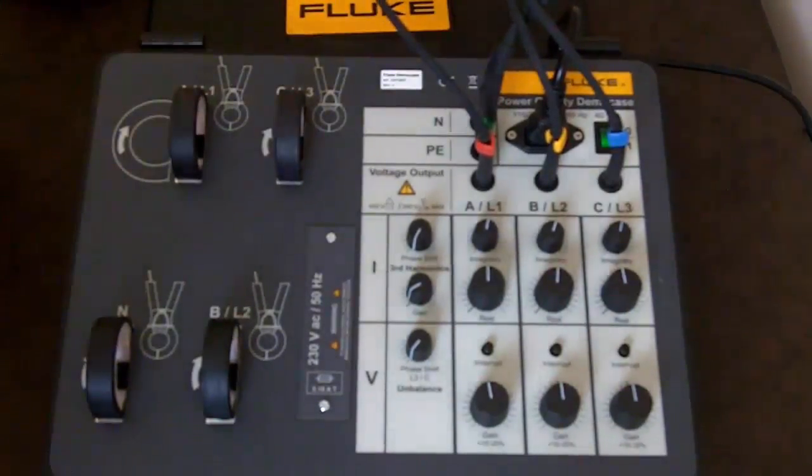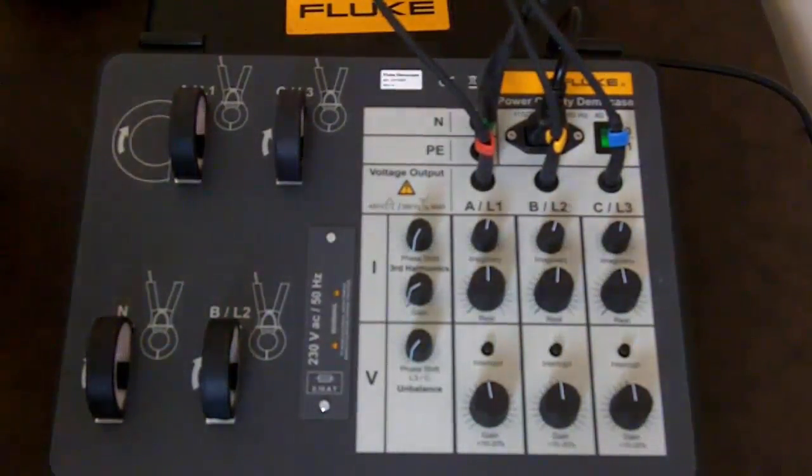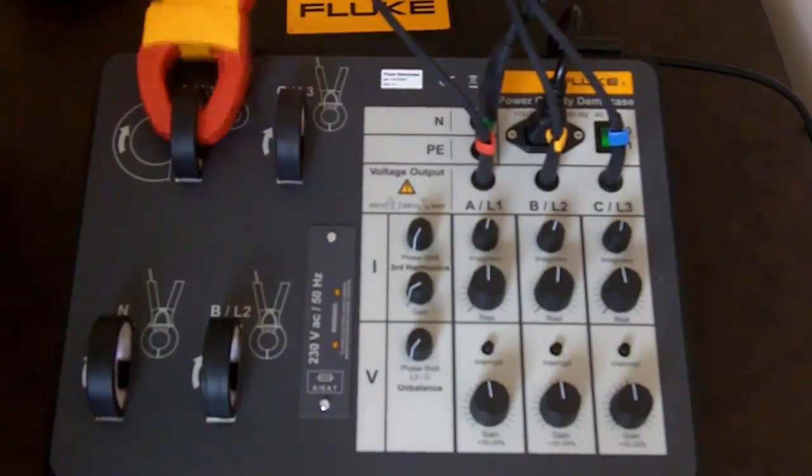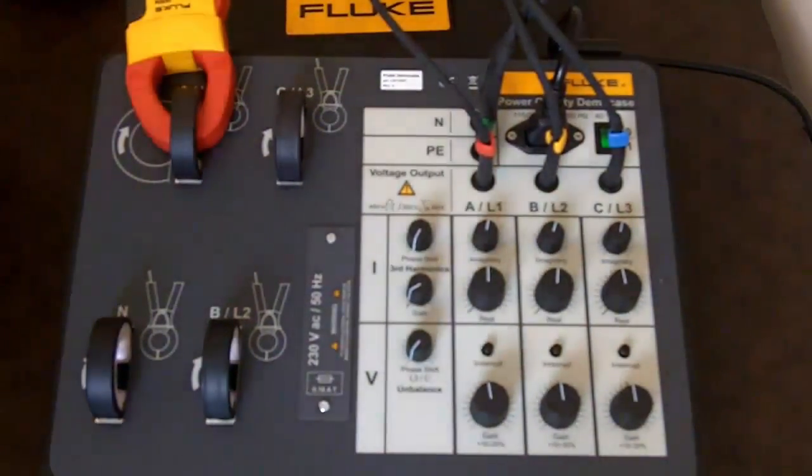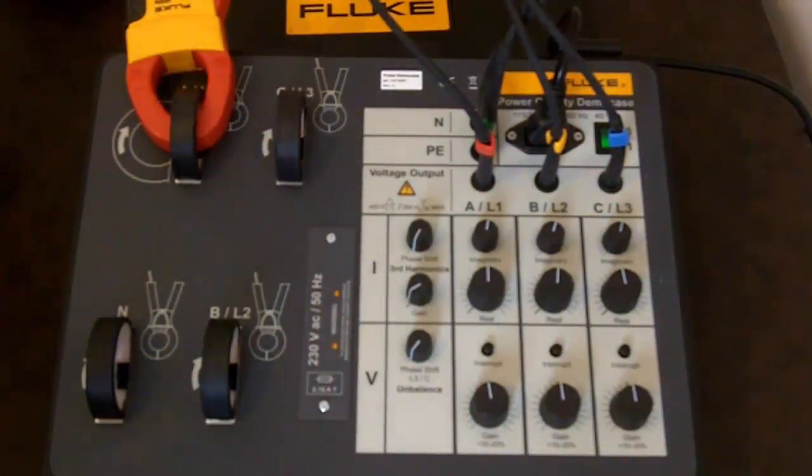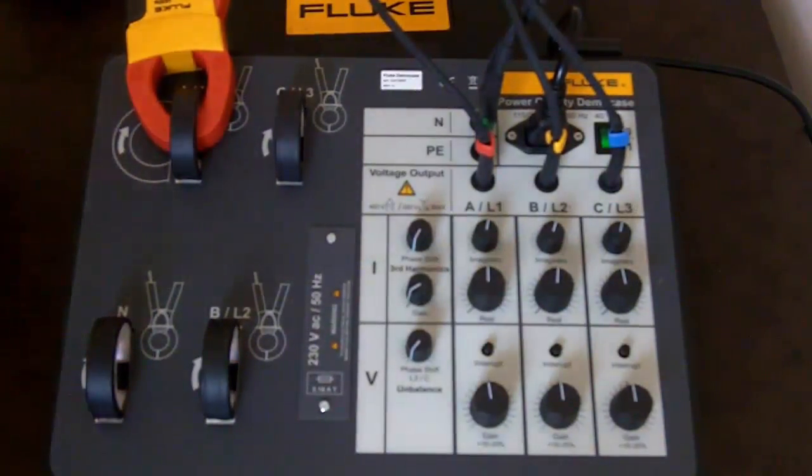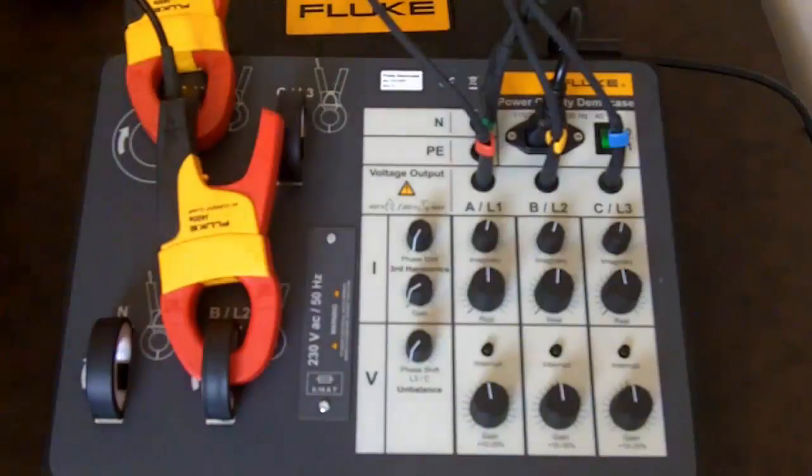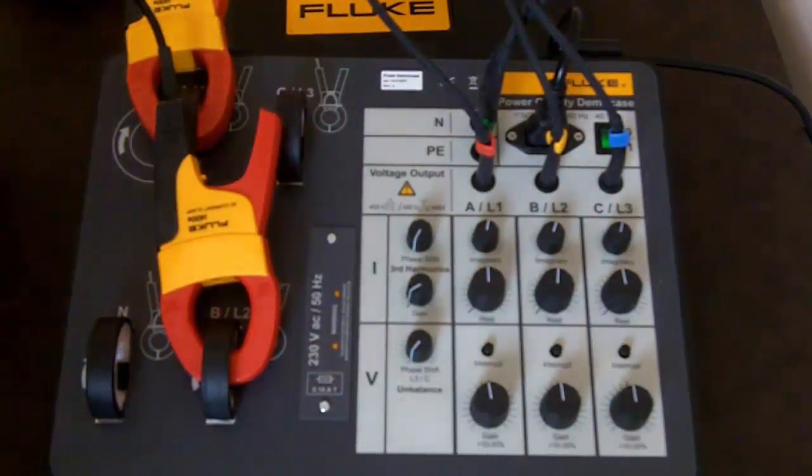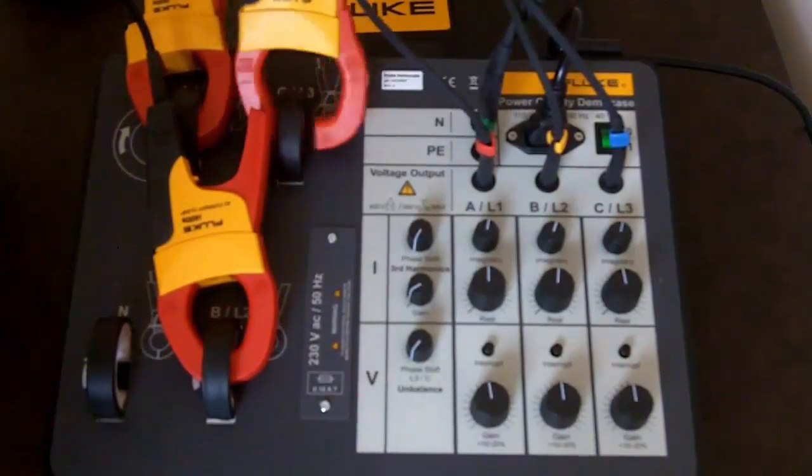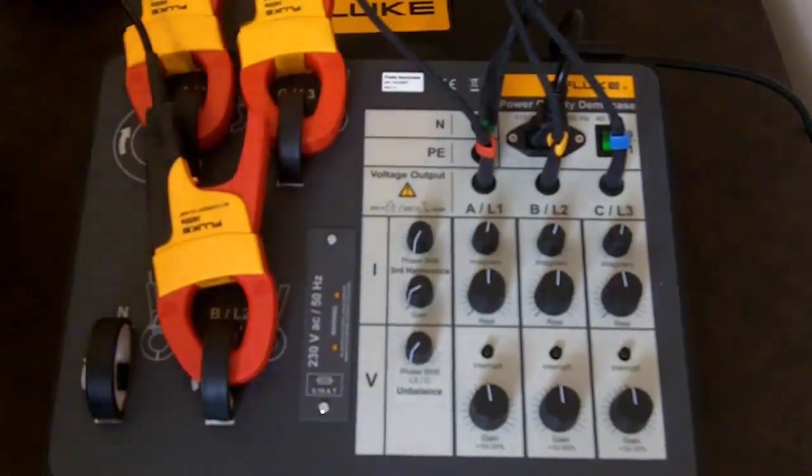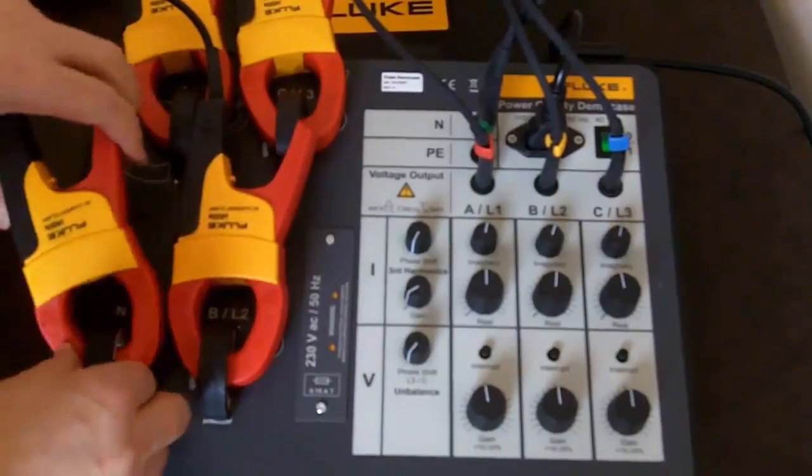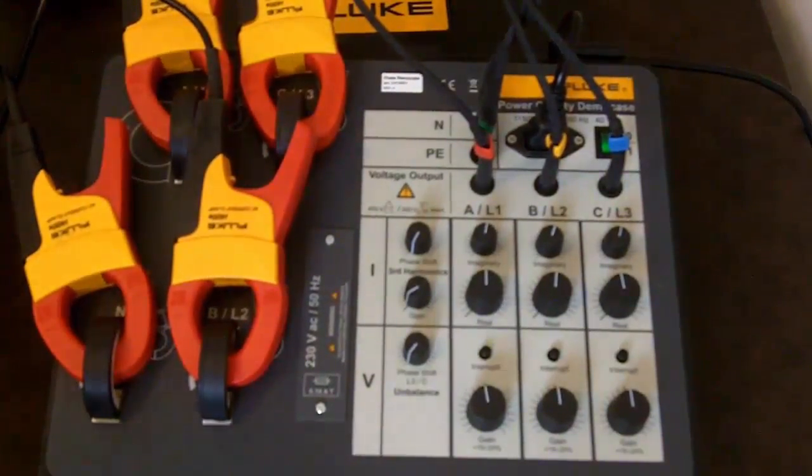We can now connect up for current. We will use current clamps in this case observing the polarity which is indicated on the case. So first of all we will go to phase A, making sure that that is snap shut. Then phase B or 2. Again make sure that is tight and shut. Next is phase 3 or C. Once again click to make sure we measure the right current. And then lastly we will connect to the neutral. Push it inside the ring. And now we are ready to make a measurement.